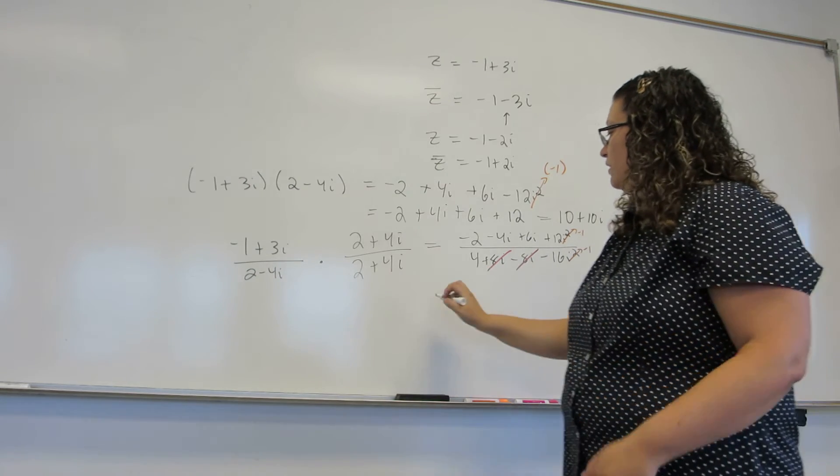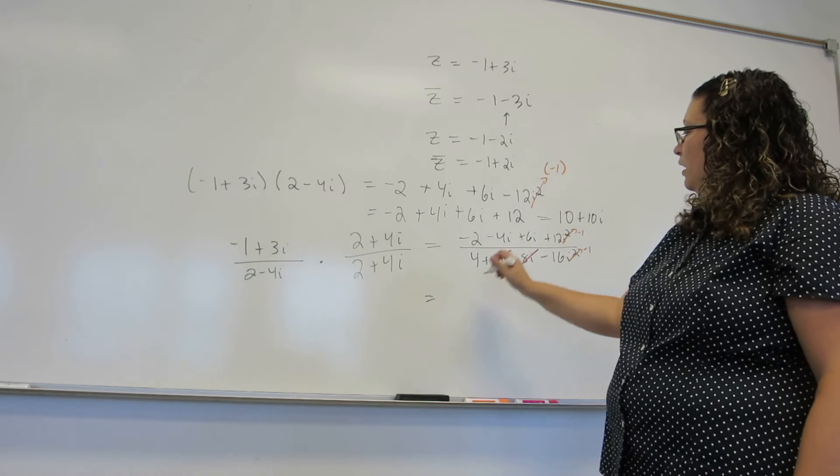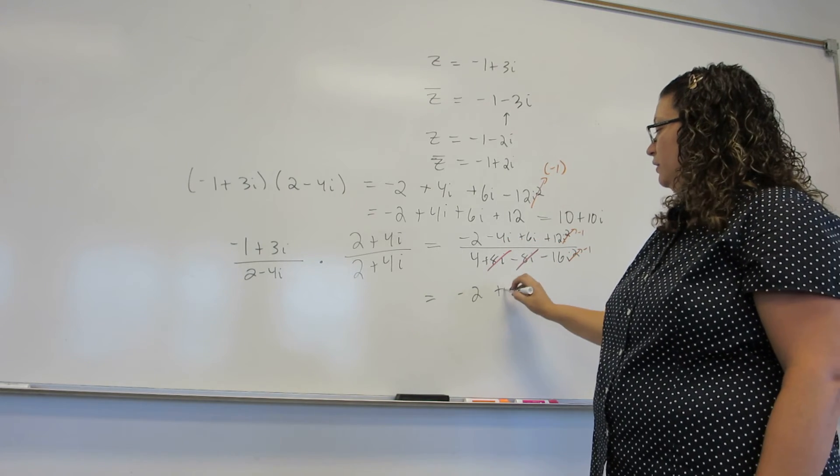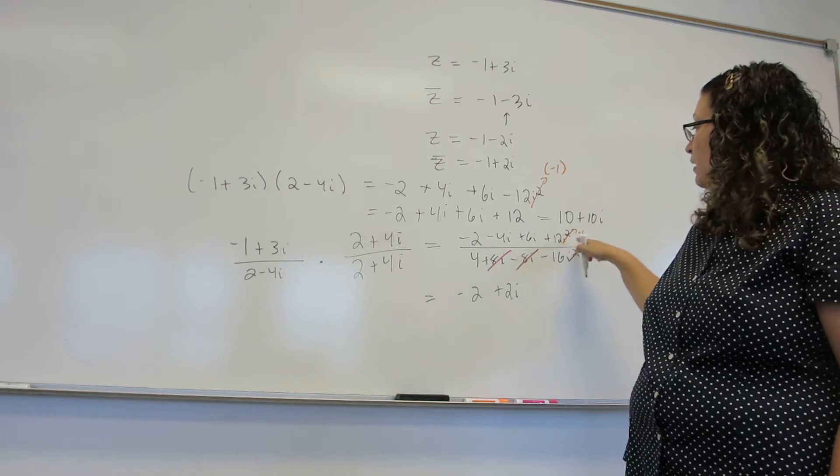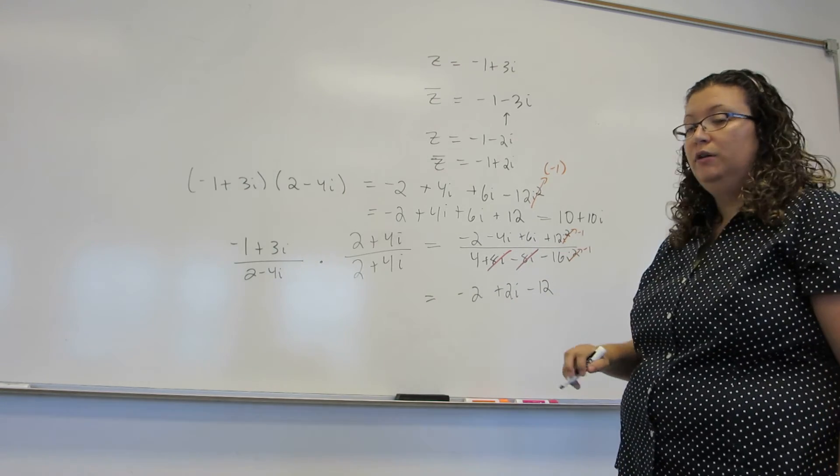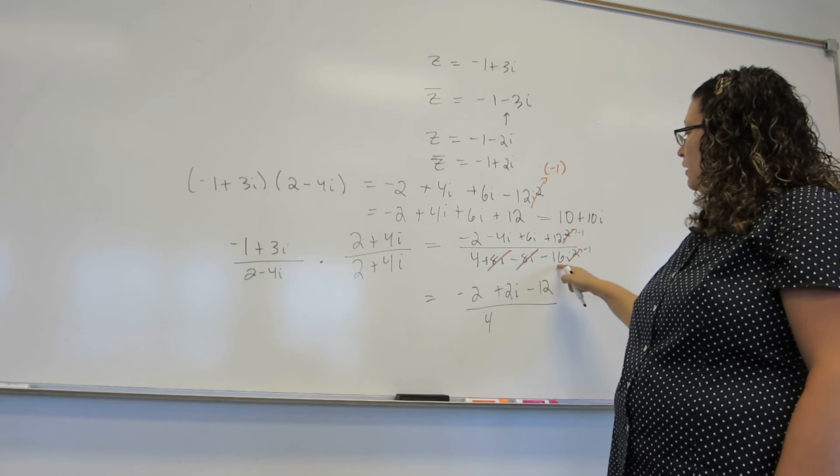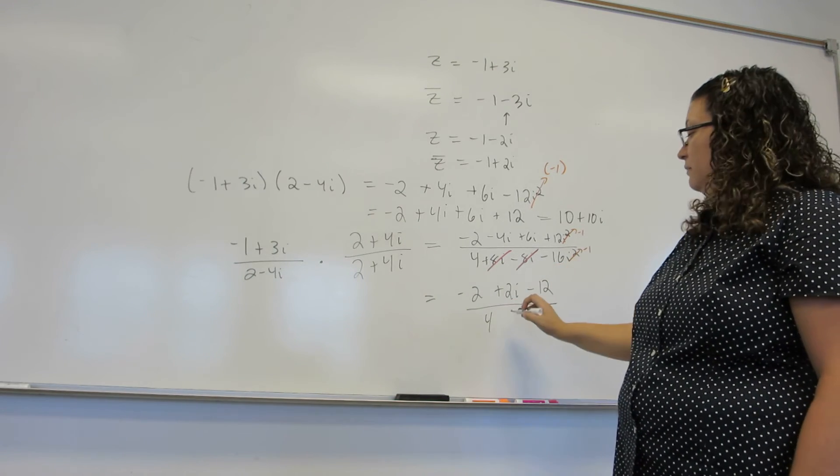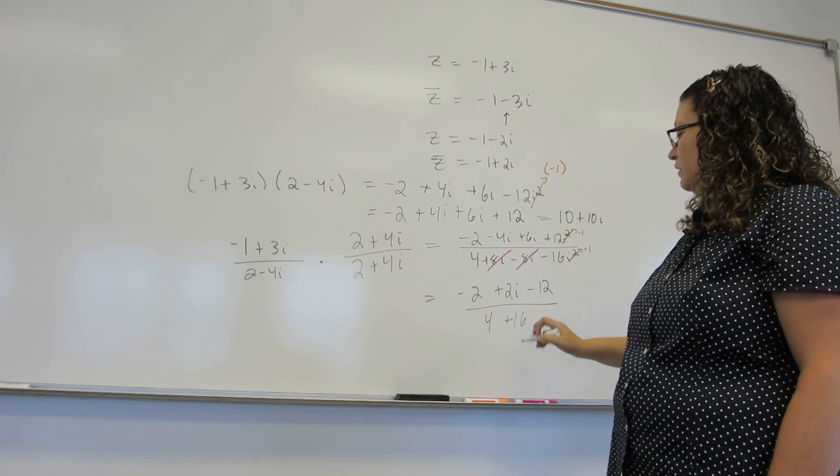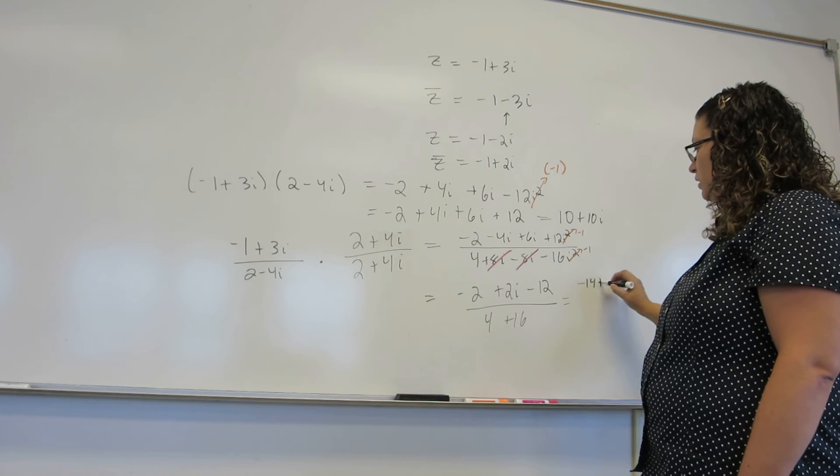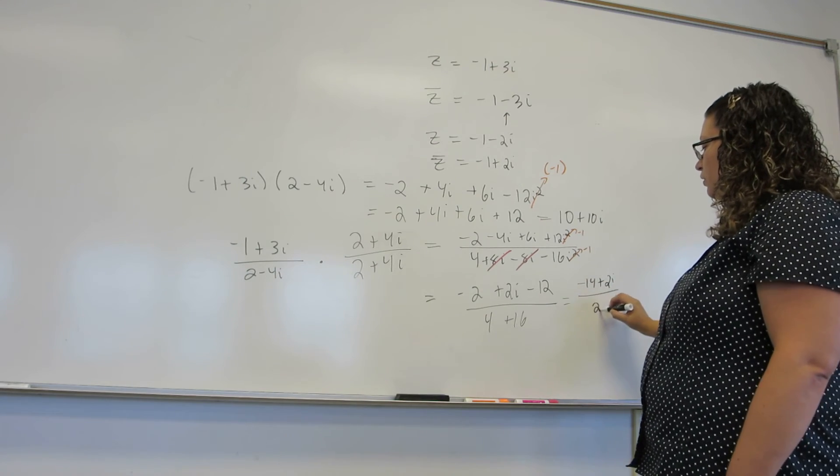So, what do we end up with? On top, I have minus 2. Minus 4i plus 6i is plus 2i. And 12 times minus 1 is negative 12. On bottom, I have 4. And then minus 16 times minus 1 is plus 16. This turns into minus 14 plus 2i over 20.